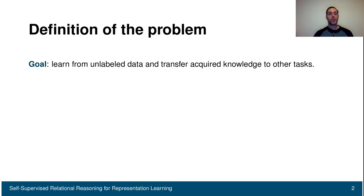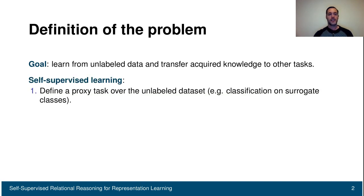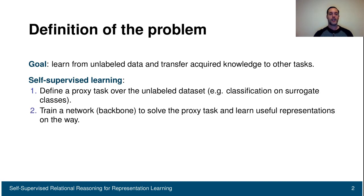The idea here is to learn from unlabeled data and then transfer this knowledge to other tasks. In self-supervised learning, this is done in three steps. First, we define a proxy task over the unlabeled dataset — this can be classification on a surrogate set of classes. Then we train a network called the backbone to solve this proxy task, and we learn useful representations along the way.